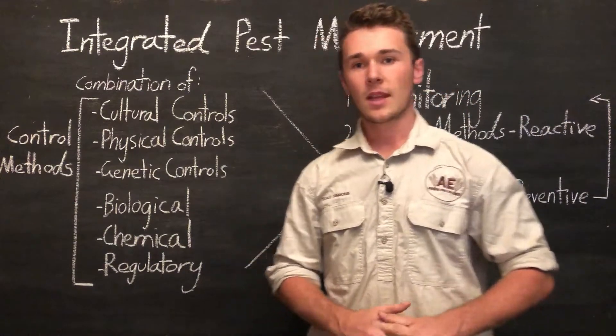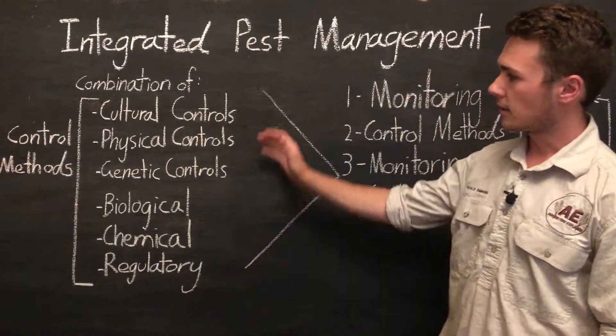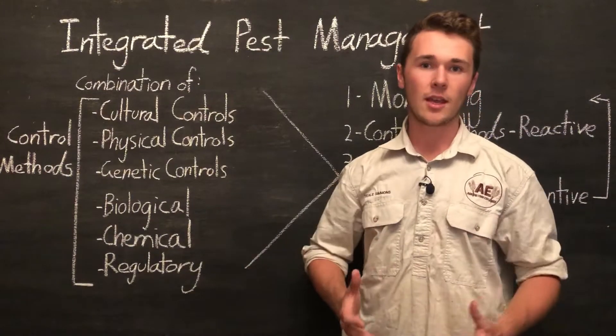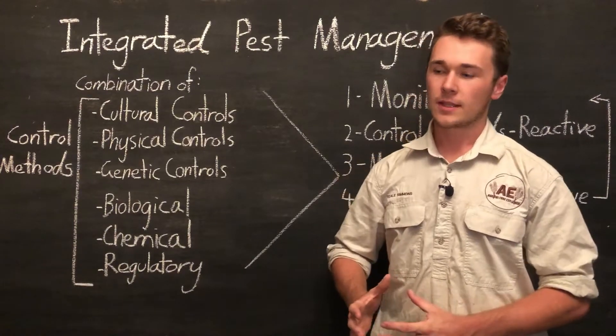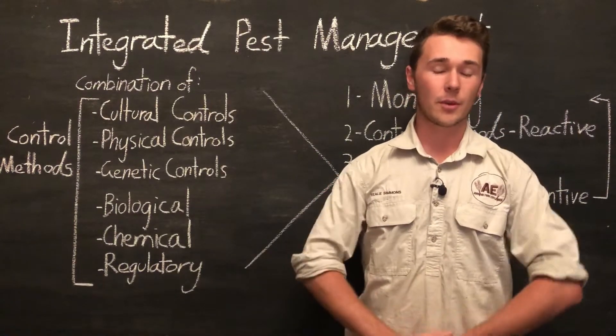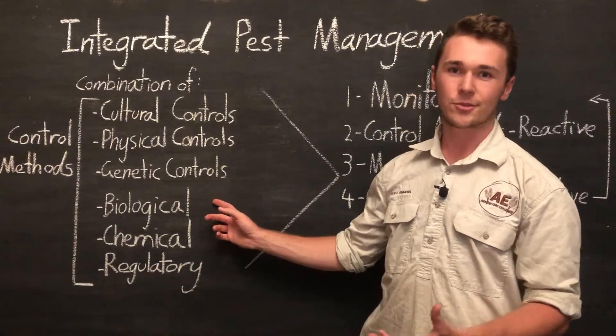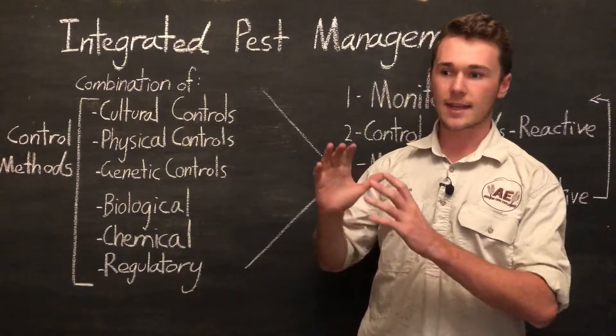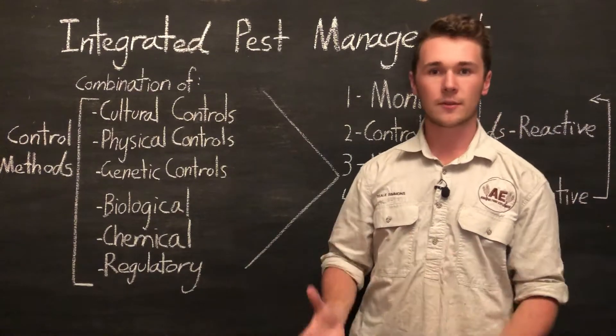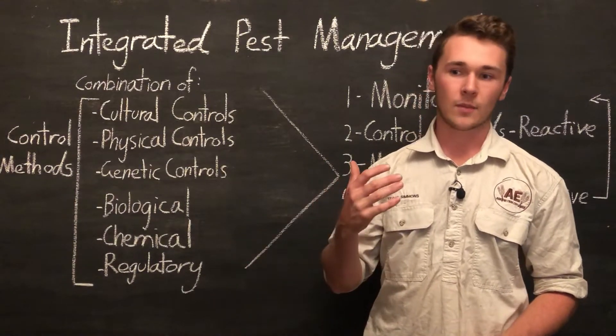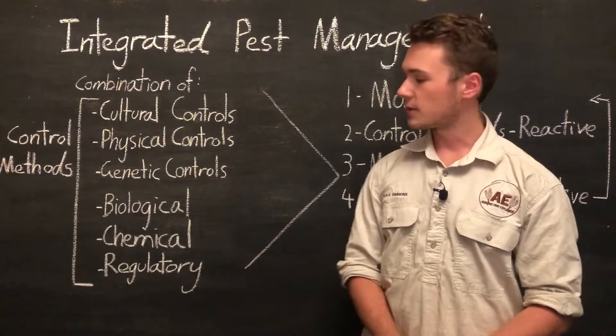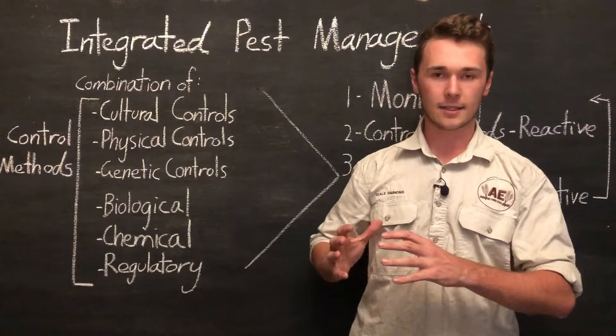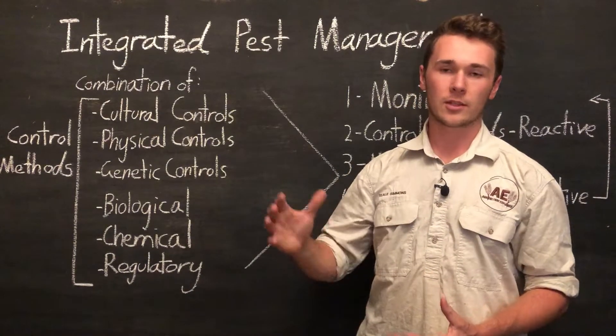What an integrated pest management is is a combination of different control methods. So these include cultural, physical, genetic, biological, chemical, and regulatory controls. Now all of these are used in combination with each other to tackle the pest at different approach angles. So what I mean by this is to say for example we have a fly problem. We actually have a fly problem at the moment and we've got some pretty interesting biological controls from Bugs for Bugs. What we can do is we can target the adult fly through fly traps, and we can also get rid of the breeding material or the material that the fly pupa are grown in, and we can also use these biological controls to get rid of the fly pupa. So IPMs are talking about different approach angles to targeting one specific pest, and over time we're going to be reducing the population numbers.